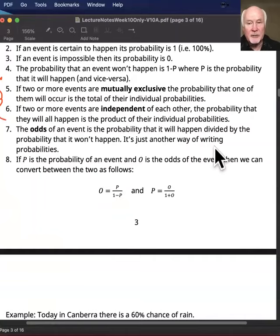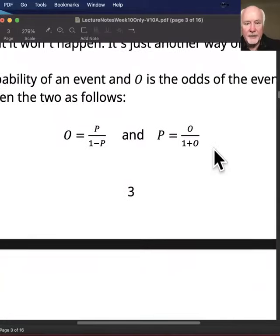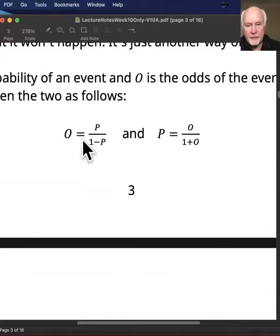So the odds of an event as opposed to the probability, the odds of an event is the probability that it will happen divided by the probability that it won't happen. So odds are just another way of writing a probability. If something has a probability of happening or being true, then you can calculate the odds for it happening or being true and vice versa. So there's two little formulas. They're not very hard. So odds, we'll use P for the probability that something's going to happen or something is true, and it's divided by one minus P.